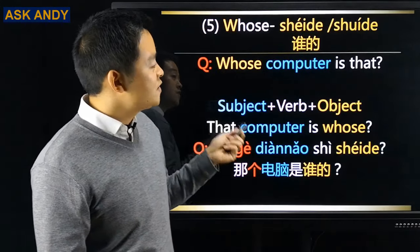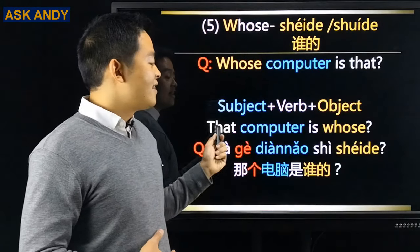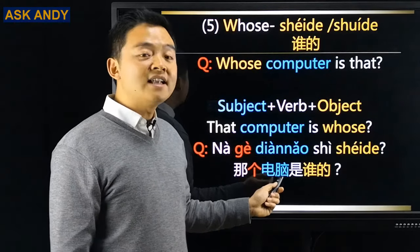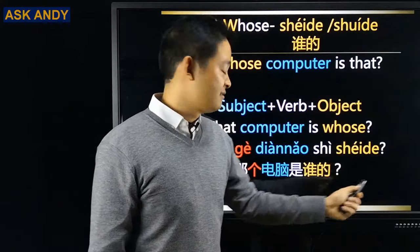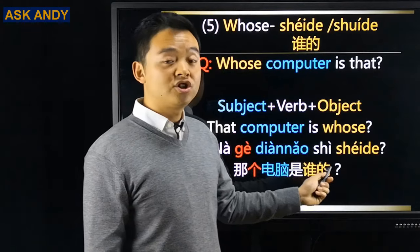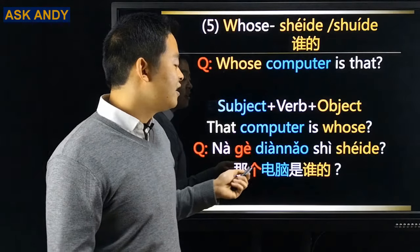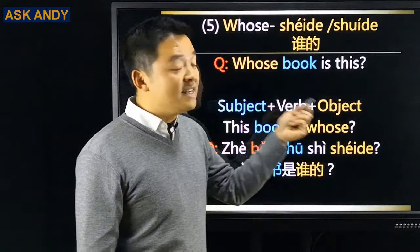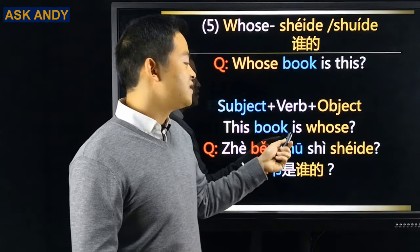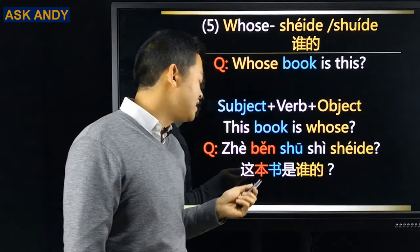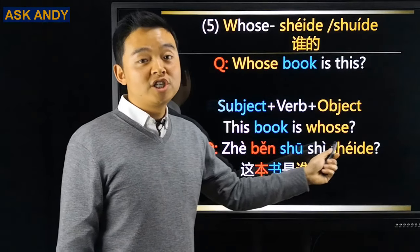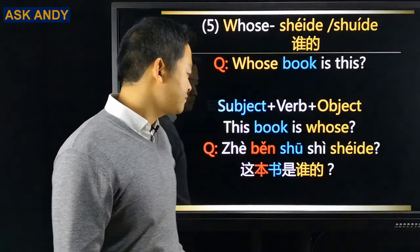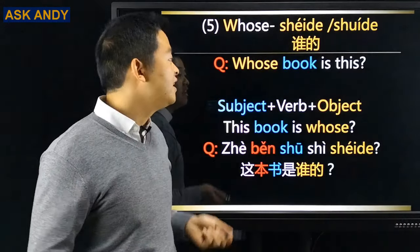'Whose computer is that?' Rearrange to 'that computer is whose': 哪个电脑是谁的? The 个 is the measure word for 电脑. 'Whose book is this?' → 这本书是谁的. Here 本 is the measure word for book.